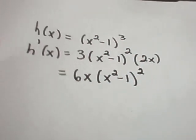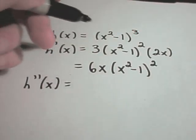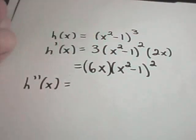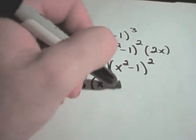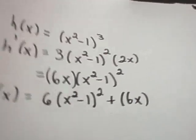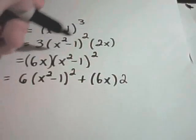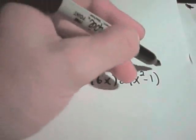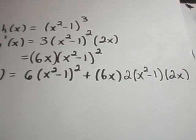Multiplying 3 and 2x gives 6x, so f'(x) = 6x(x² - 1)². Now to take the second derivative, I'll need to use the product rule as well as the chain rule. Thinking of 6x as one piece: the derivative of 6x is 6, times (x² - 1)², plus 6x times the chain rule derivative of (x² - 1)². The 2 comes out front, leaving (x² - 1) to the first power, multiplied by 2x.